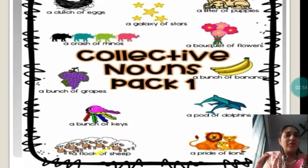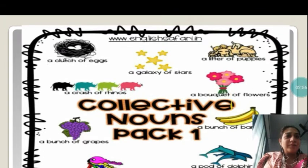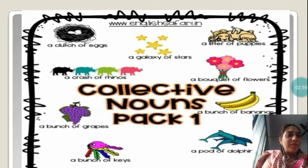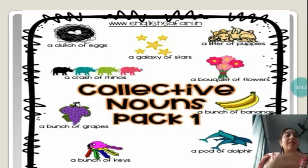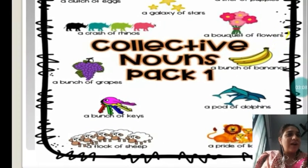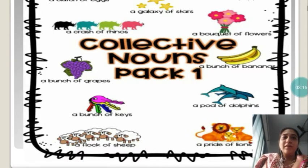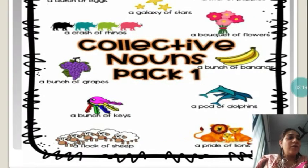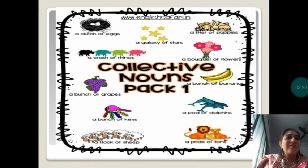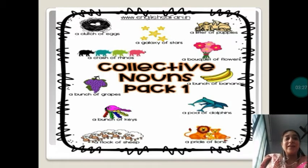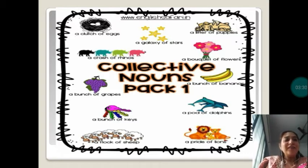In the picture you can see many examples: a clutch of eggs, a litter of puppies, a galaxy of stars, a crash of rhinos, a bouquet of flowers, a bunch of grapes, a bunch of bananas, a bunch of keys, a pod of dolphins, a flock of sheep, and a pride of lions. So whenever a word represents a group of people, animals, or things, it is said to be a collective noun.